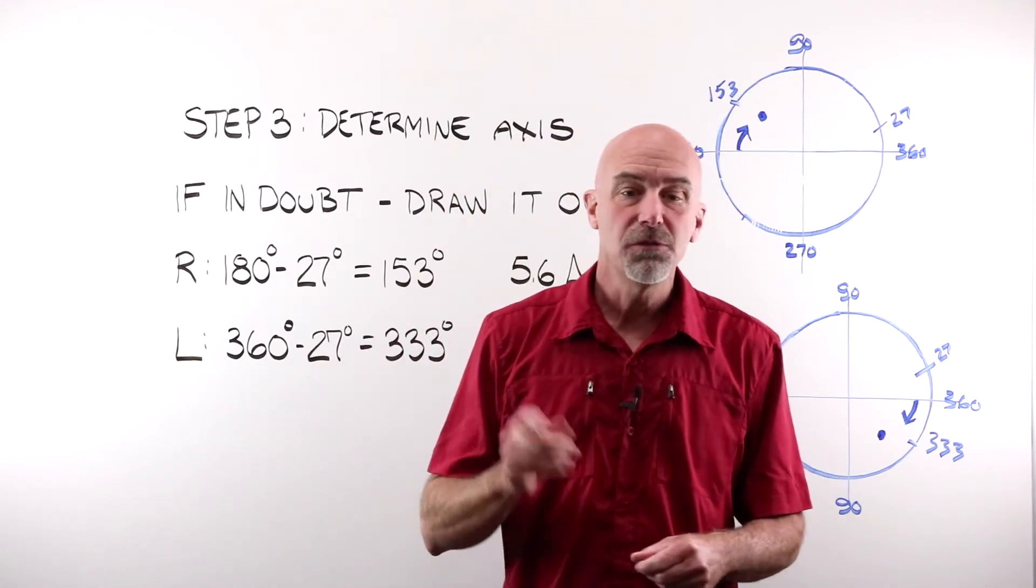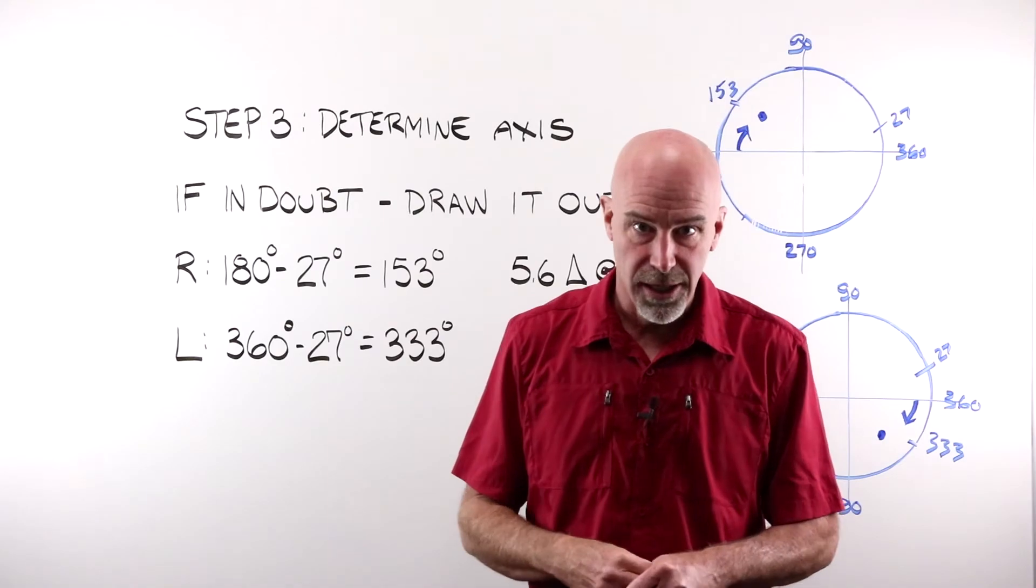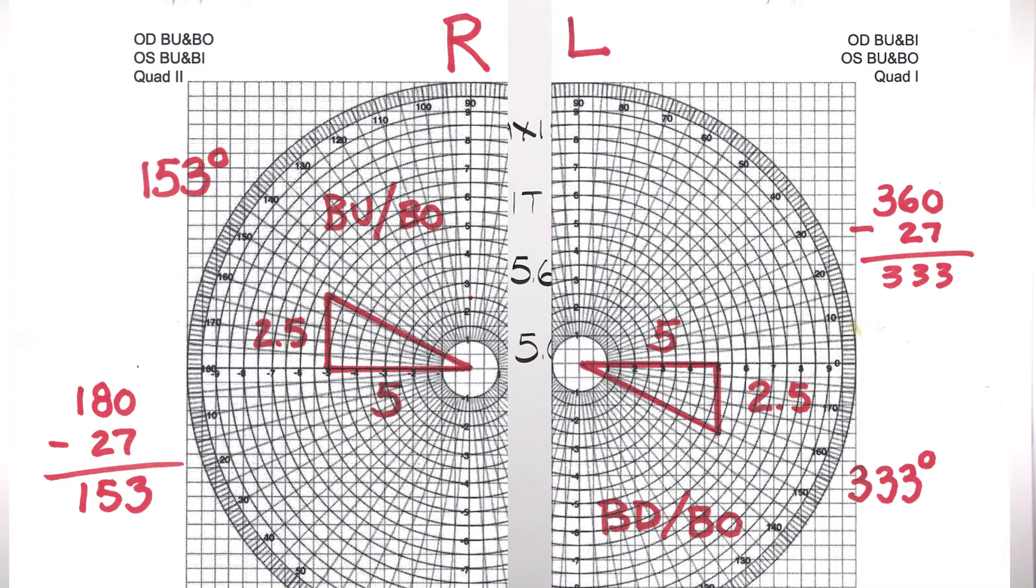I mentioned that you can use the chart to work these by hand, and that is what I should have done, and this is what it actually looks like. If I plot my prism on the chart from my right, I have base up and base out. I move over along that 180 degree line 5 steps, and up 2.5 steps. It's right there in front of you. You don't actually even need to do the math. If you just draw it out on the chart, you'll have the answer in front of you. If we look at the left, if I move over 5 to the right along the 180, and then down 2.5, because my prism amount is down and out in the left lens, I end up along the 333 degree line instead.